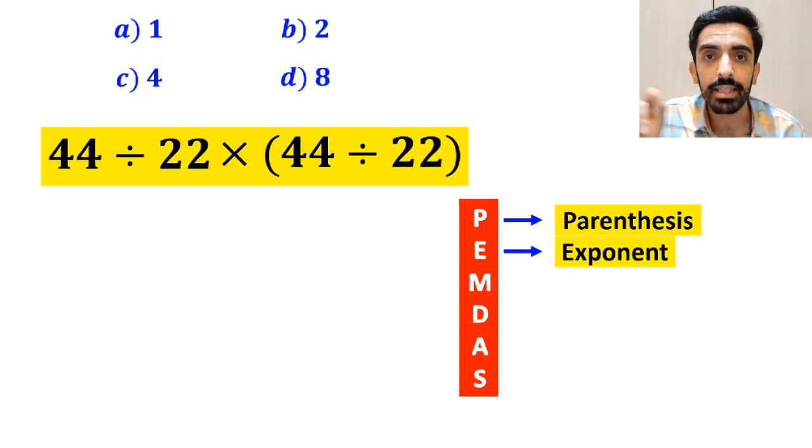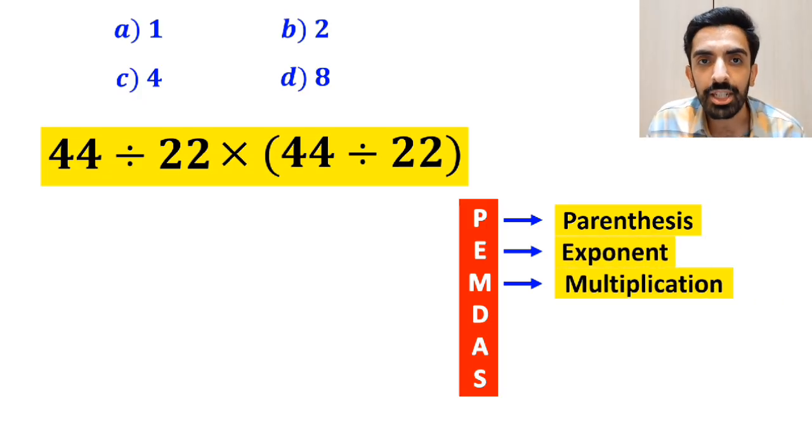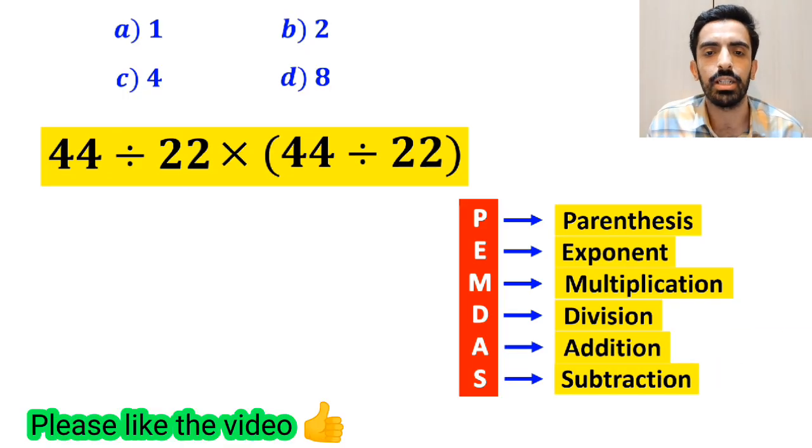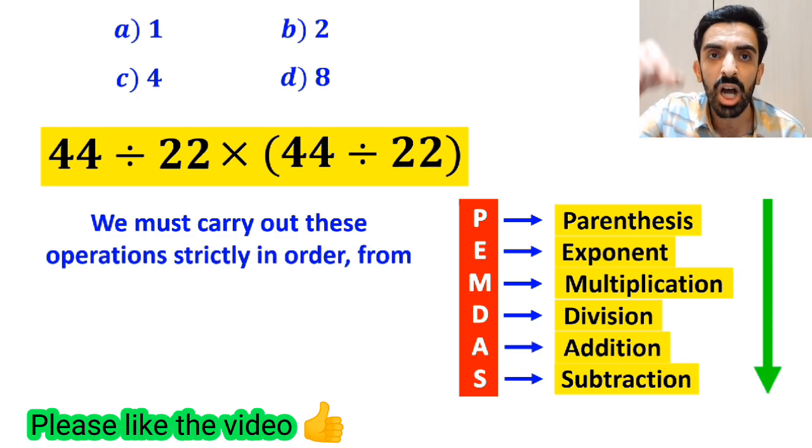M stands for multiplication, D stands for division, A stands for addition, and S stands for subtraction. We must carry out these operations strictly in order from top to bottom.